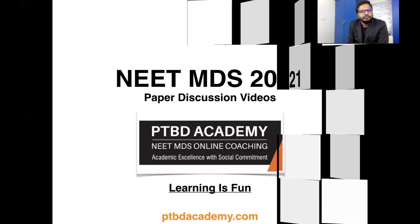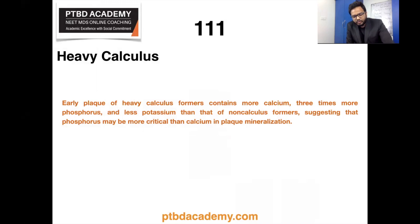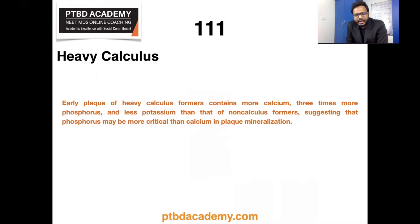First, we'll deal with the topic: heavy calculus vs non-calculus formers — difference in the composition of plaque in terms of mineral content. As a quick review, calculus is mineralized dental plaque. Saliva is the source of mineralization for supragingival calculus, whereas for subgingival calculus it is GCF, which is a serum transudate. The calcium concentration in plaque is 2 to 20 times that found in saliva.